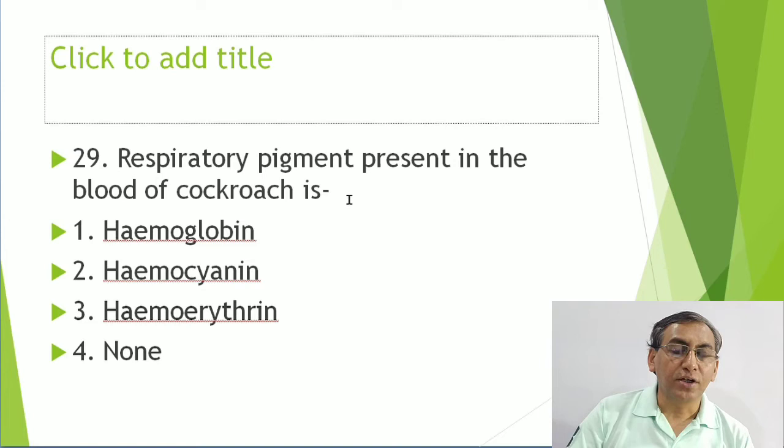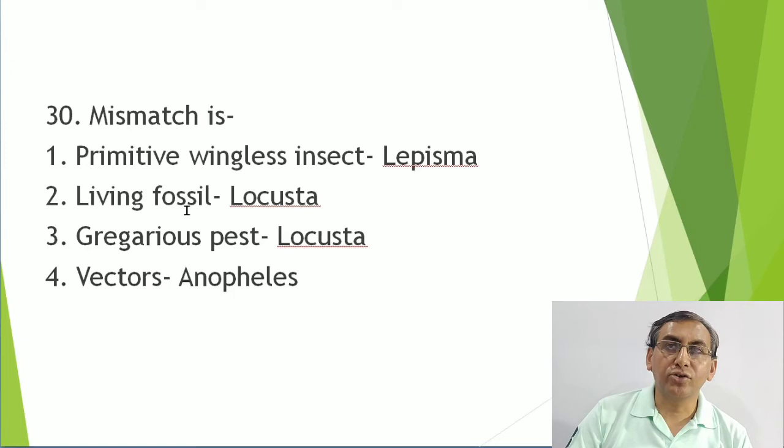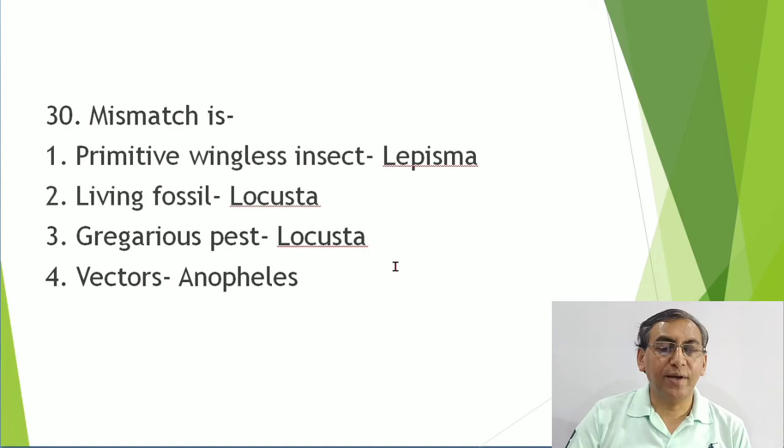Respiratory pigment in the blood of cockroach is absent. Oxygen reaches directly to body cells in dissolved state through tracheoles. Lepisma silverfish is a primitive wingless insect - correct. Limulus king crab is a living fossil - this is mismatched if another term is used.